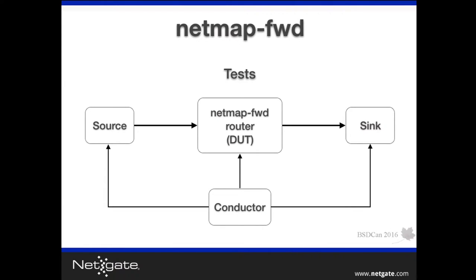This is how we conducted our tests. We used a tool called Conductor, written by GNN. It can be configured to run different tests for us — it applies the configuration to the source, sink, and router, and runs the test. The software can do this in an automated way so we can test different things quickly and without manual intervention all the time.